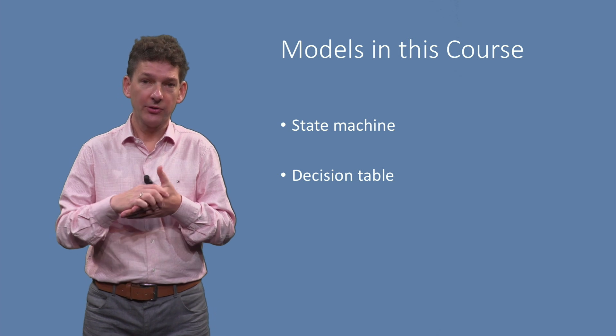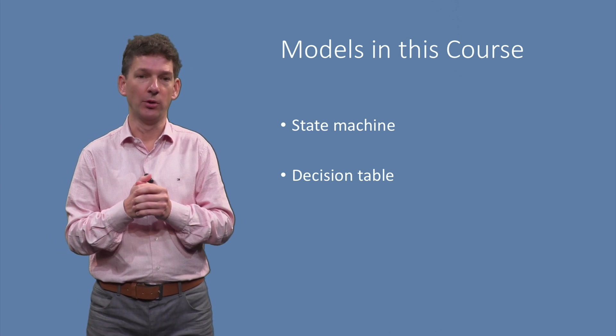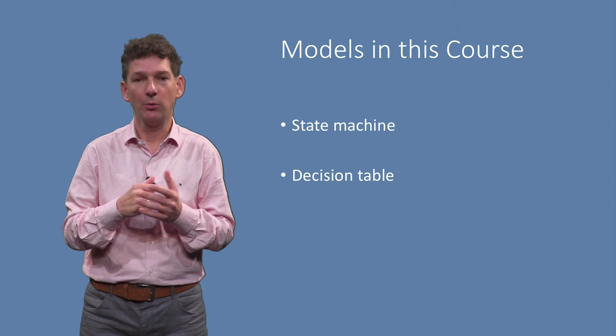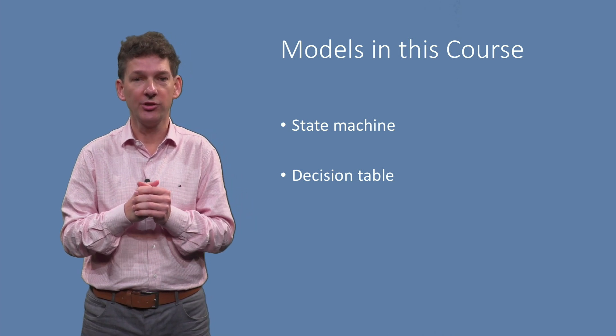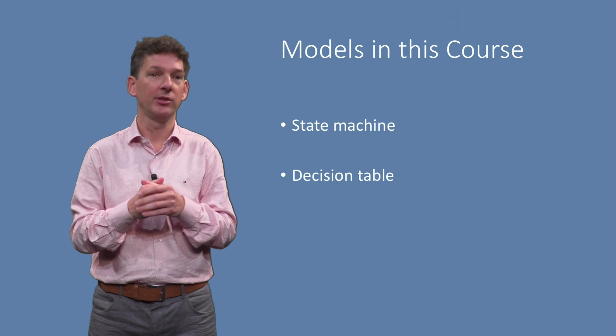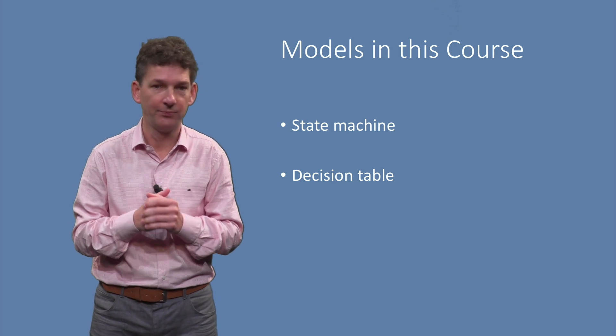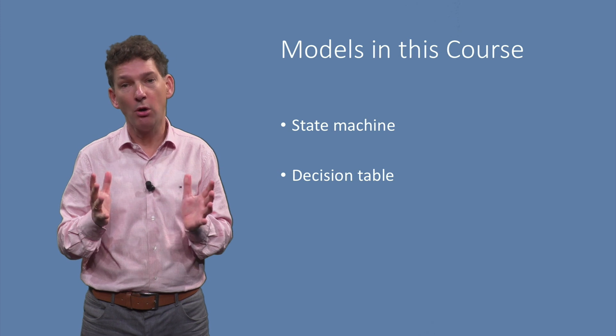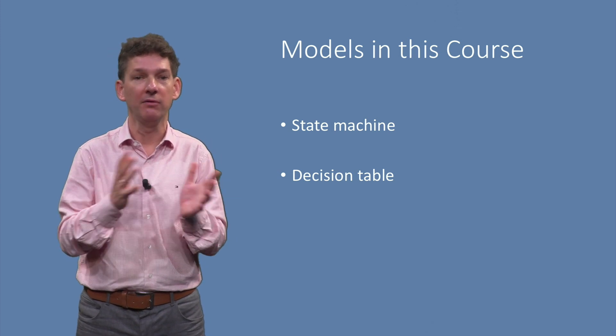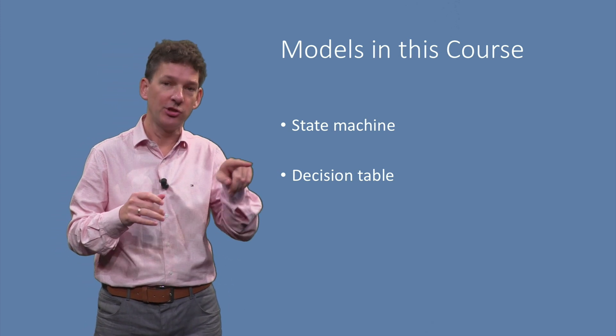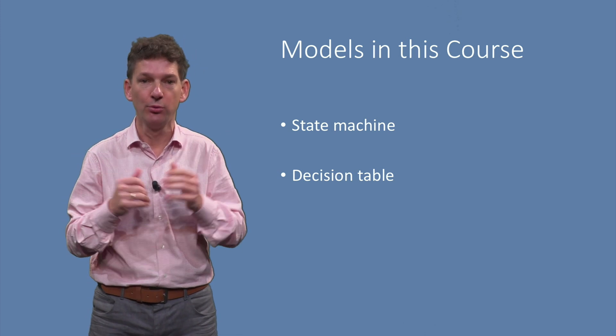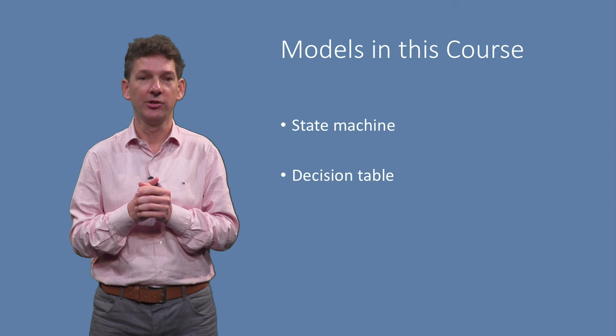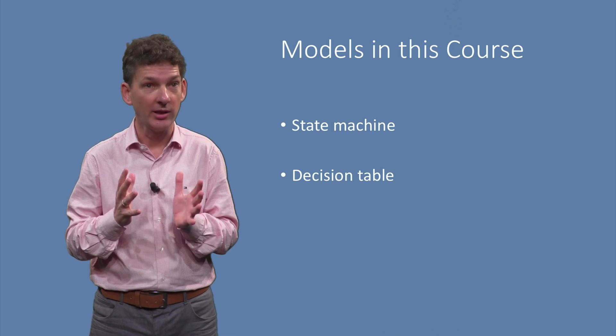In this course, we will take a closer look at two types of models. First of all, we will cover state machines. They can be used whenever a system maintains state, which, in fact, most systems do. A typical example is a web or mobile application, which can be in various states. The transitions between those states and the events, clicks, swipes, inputs, triggering those transitions are easily modeled using a state machine.